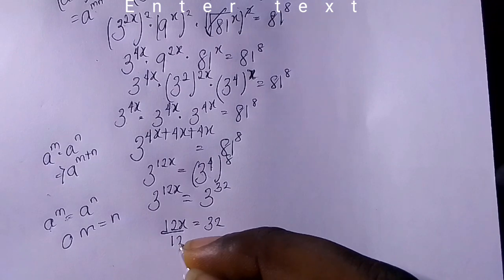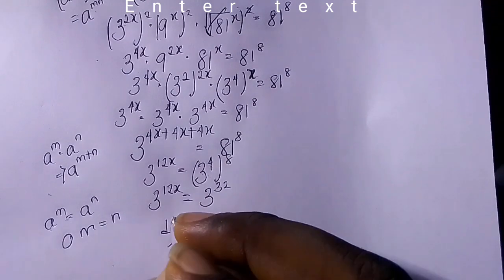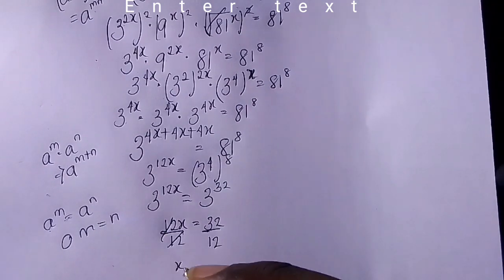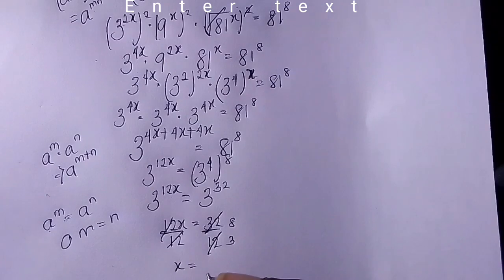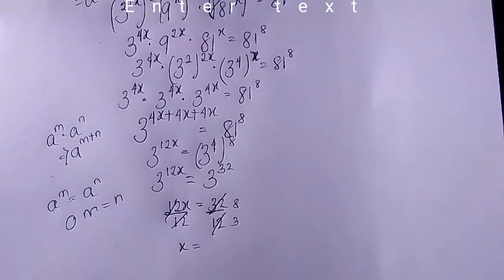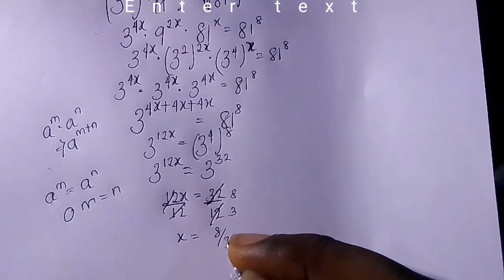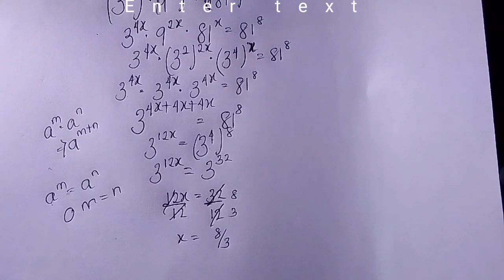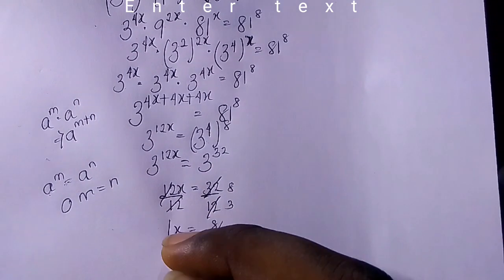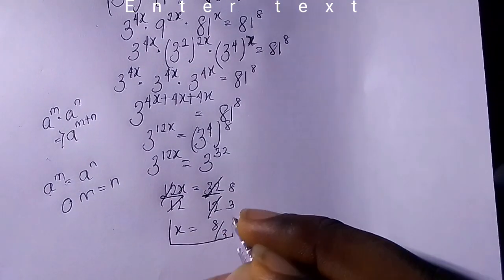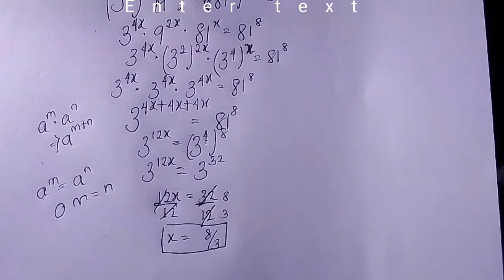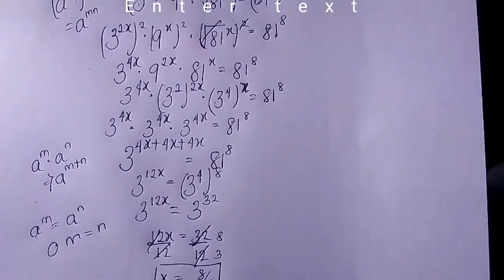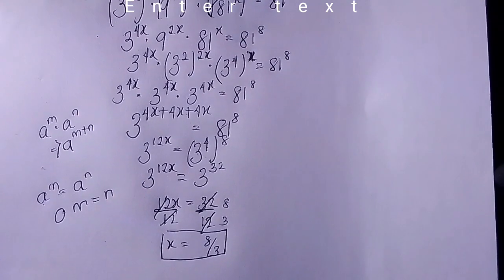Dividing both sides by 12 — the coefficient of x — we get x = 32/12, which simplifies to x = 8/3.